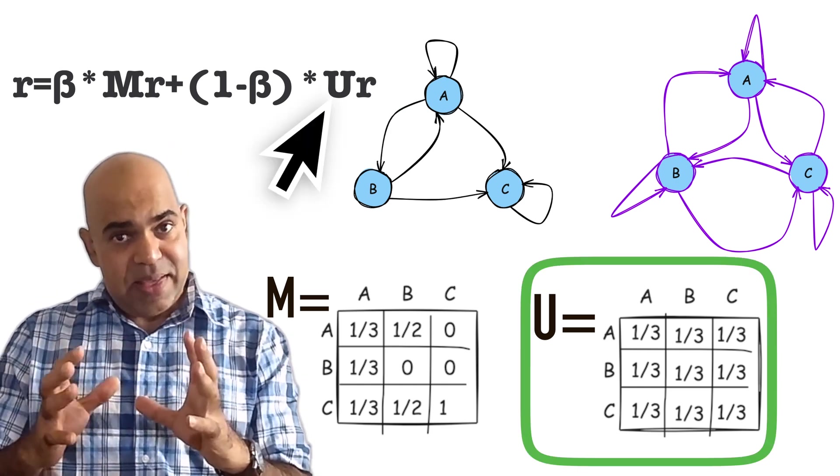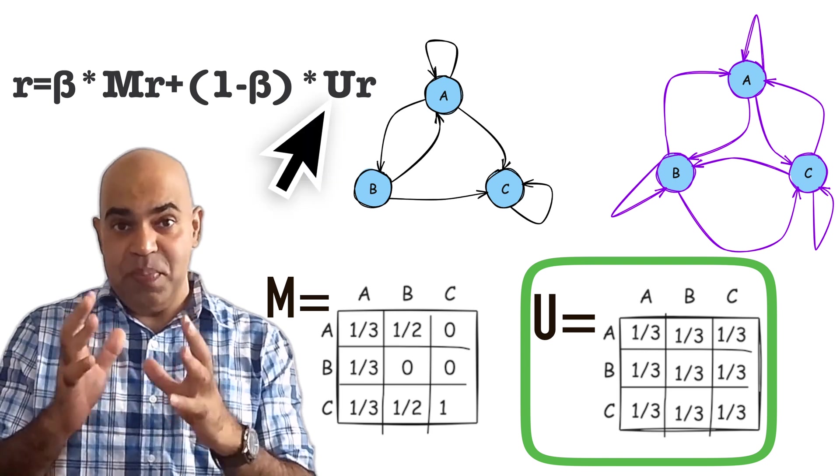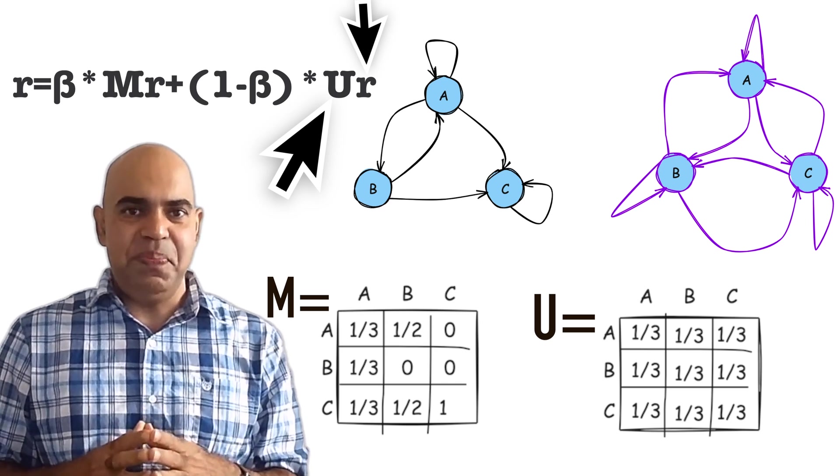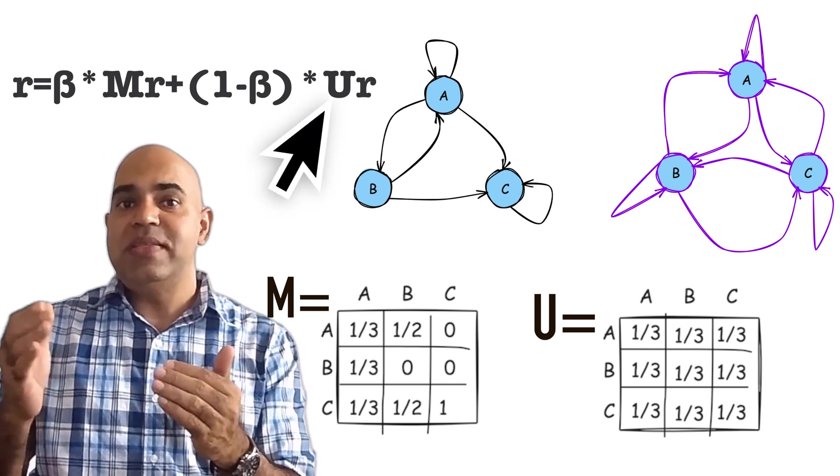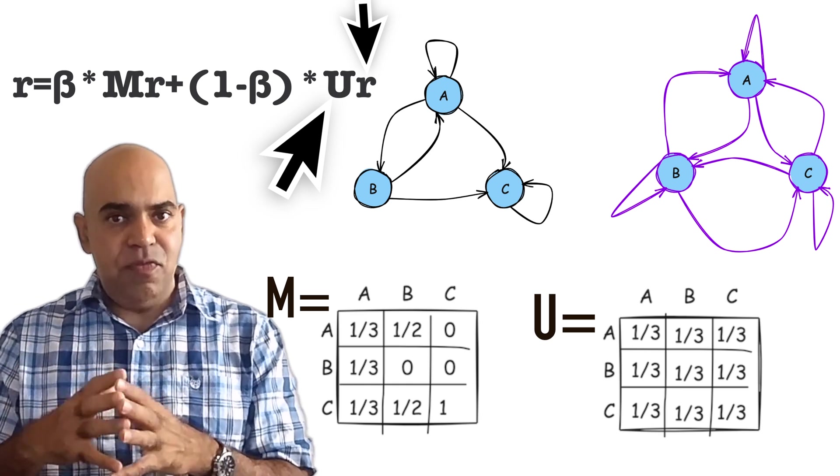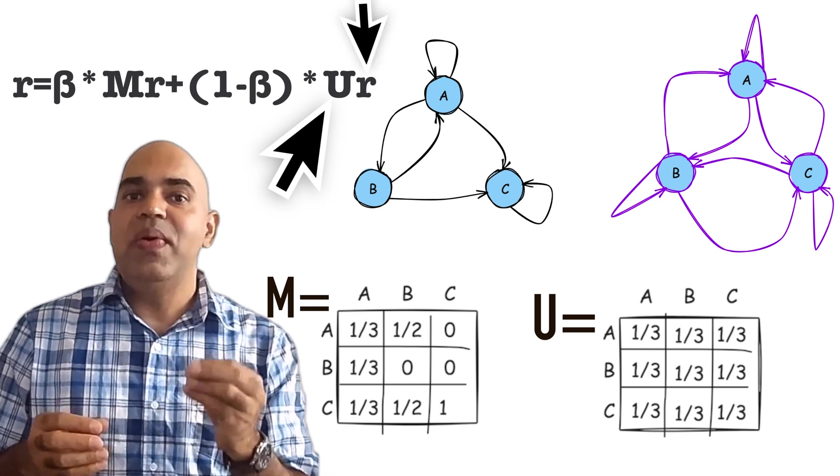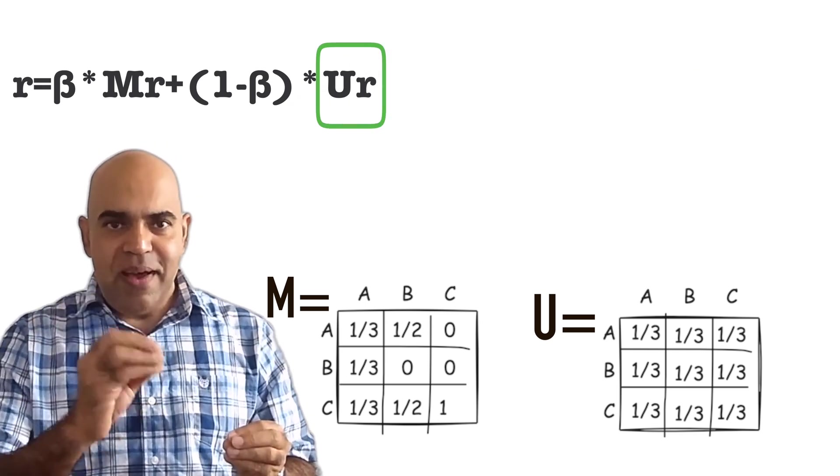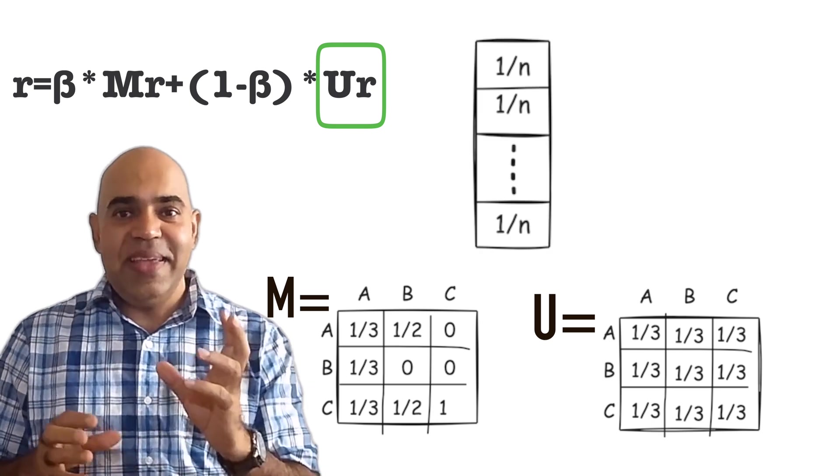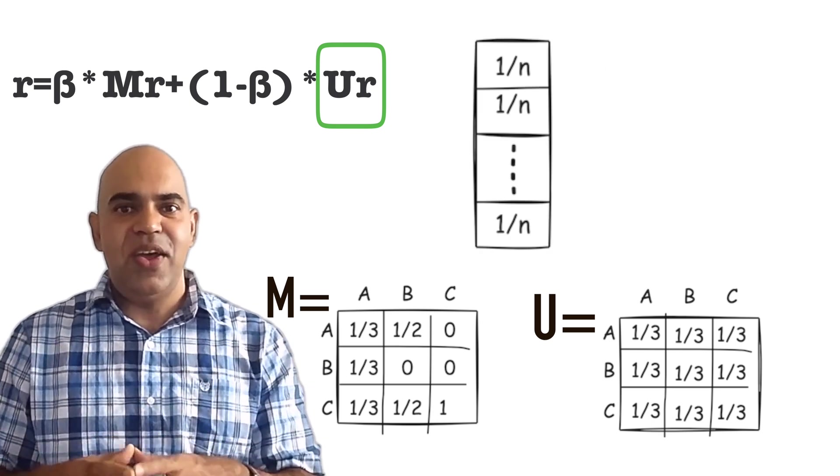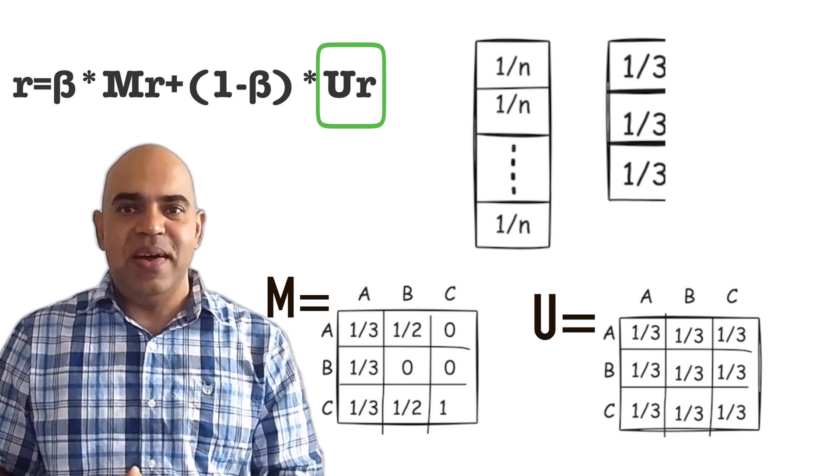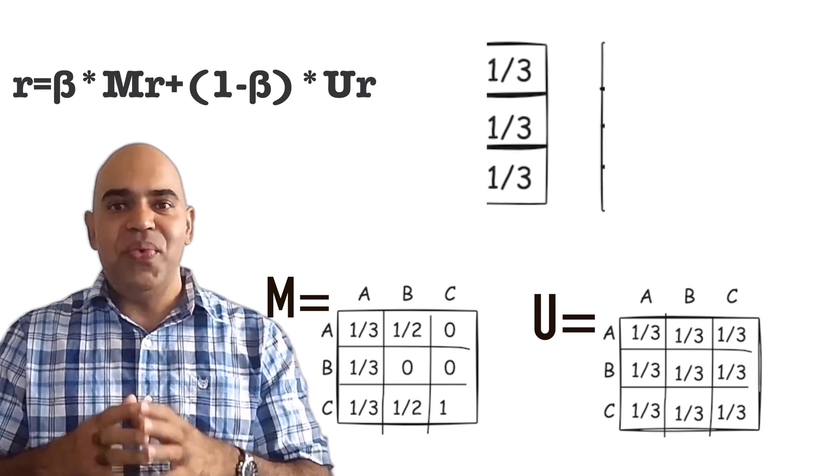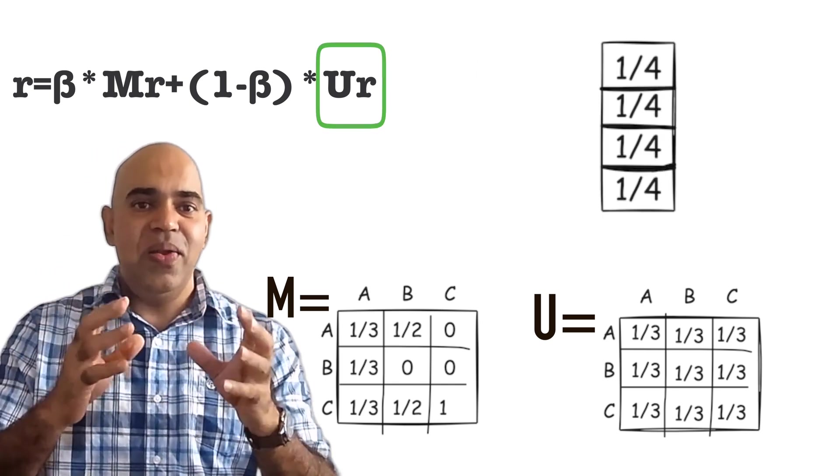Notice that U is a uniform matrix. We are multiplying it with a rank vector which always sums up to 1.0. If we multiply a column stochastic matrix by a rank vector that sums up to 1, we will always get a uniform rank vector. That means this U times R will always be a uniform rank vector. For an internet of 3 websites, U times R will always be this. For an internet of 4 websites, U times R will always be this.